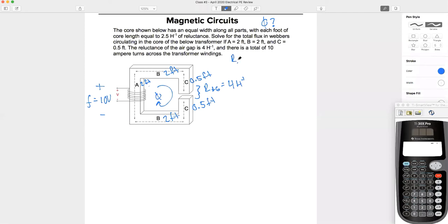So let's see, reluctance A is going to be 2.5 inverse henries per foot times 2 feet, which is 5 inverse henries. We can say RB is going to be the same. RB is 2 feet long. The core has a value of 2.5 inverse henries per foot, so RB is equal to the same 5 inverse henries. And last, C. What's the length of C? Half a foot times the same core value of 2.5 inverse henries per foot. That comes out to 1.25 inverse henries.